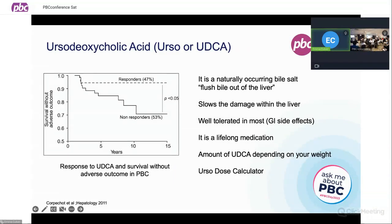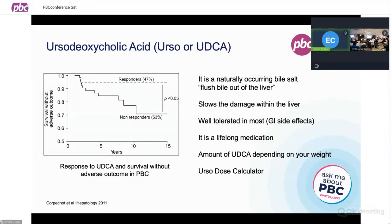The idea of ursodeoxycholic acid is to slow down the damage within the liver. It's well-tolerated in most patients — those who have poor tolerance will often have GI-related side effects such as nausea, bloating, or diarrhoea, but in 90% or more of patients it's actually very well-tolerated. Once you start it, it's a lifelong medication. The amount of the drug really depends on your weight, and we all have to remember that your weight will change over time, so the calculation of how much drug you take also changes over time.